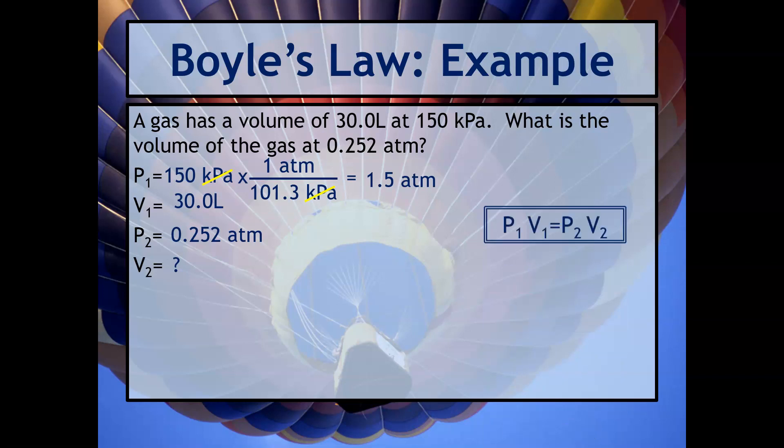Now you've got the pressure units to match, so that's good. Now the rest is just plugging and chugging. We're going to use P1V1 equals P2V2 and we're going to start plugging all these numbers in. To solve algebraically, notice that you've got a variable on the right-hand side and you've got a number next to it. So what you want to do is divide that 0.252 to either side, and then you should get that V2 equals 180 liters.